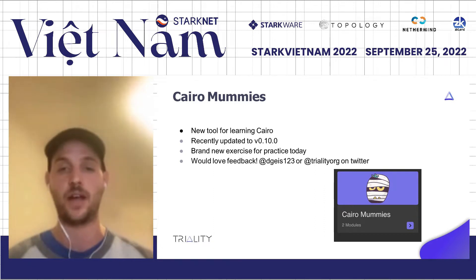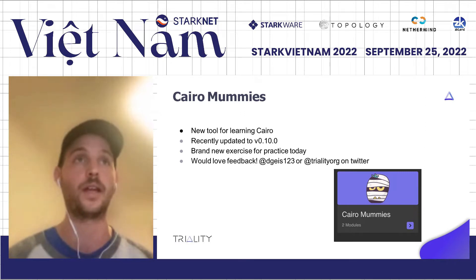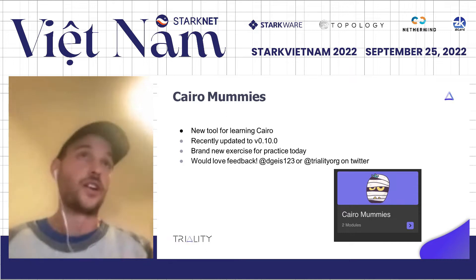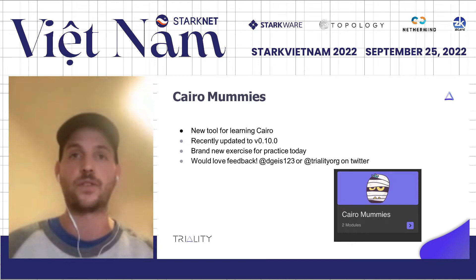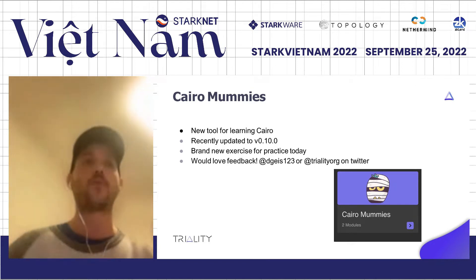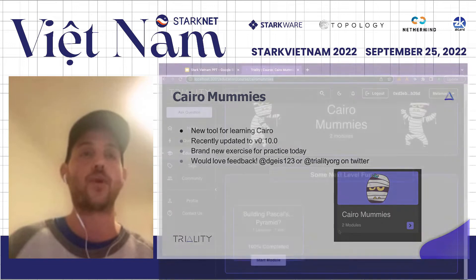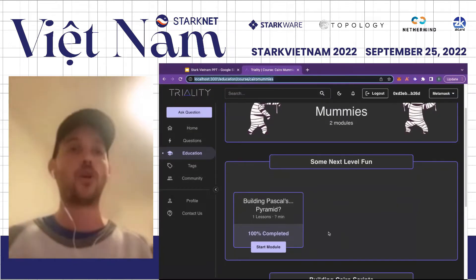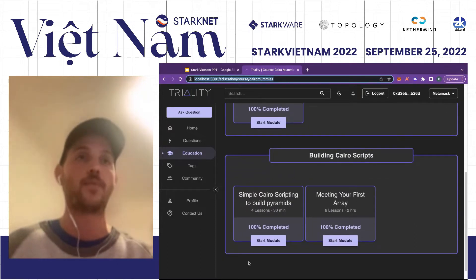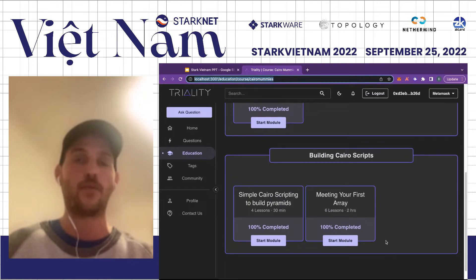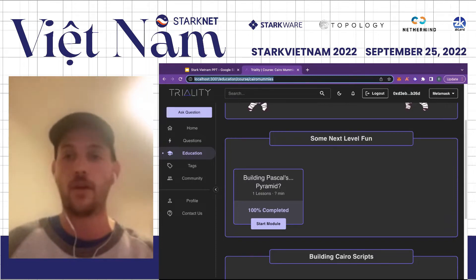We've recently updated our exercises to Cairo 0.10.0, so if you come check out our site, you'll be up to date on everything. Not to waste too much time, we're going to jump into some coding exercises. We've been getting a lot of requests for challenging coding problems, so I promise you this will be entertaining, and in the future we'll have more fun coding problems like this. These are the two modules out now — building simple Cairo scripts and working through your first array of recursion — and we have a couple more modules in progress, as well as one or two new courses that will be out in October.